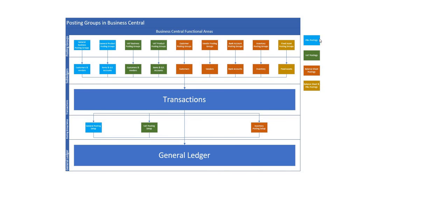On the right-hand side I've tried to determine which area of the general ledger, or what type of postings, we're making with each of these flows. In the light blue we've got P&L postings from transactions — general business and product posting groups define P&L postings. The green section defines VAT postings, orange are balance sheet postings, and fixed asset posting groups can define both balance sheet and P&L postings.